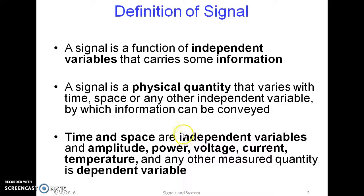Definition of a signal. A signal is defined as a function of independent variable which is carrying some information. Also we can define a signal as a physical quantity which varies with some independent variables such as time, space and any other. The independent variables are time and space and the dependent variables are the physical quantities.